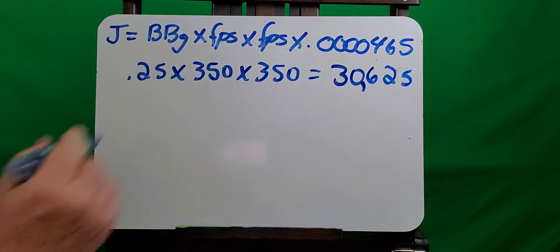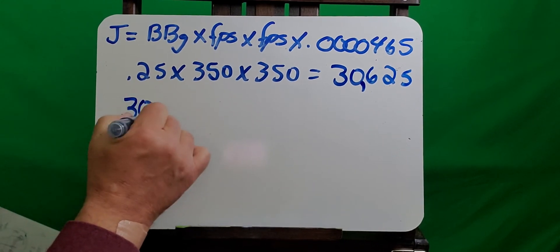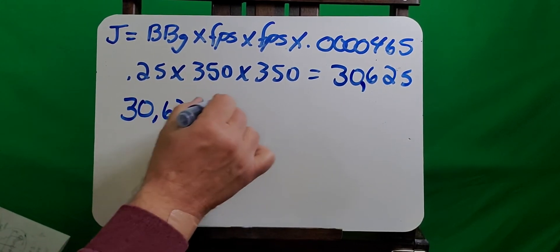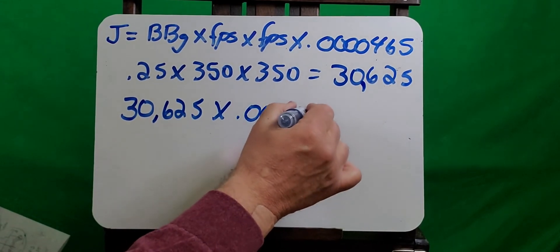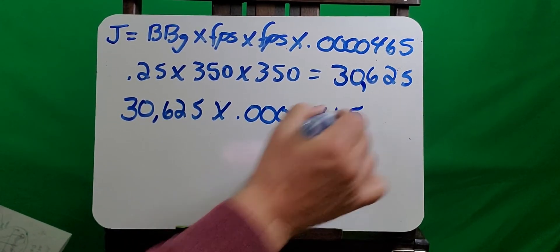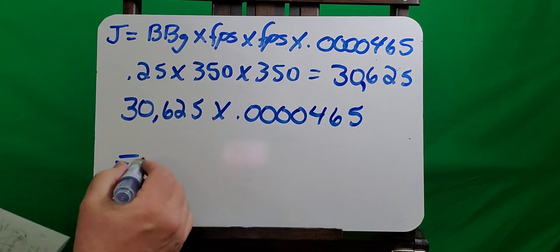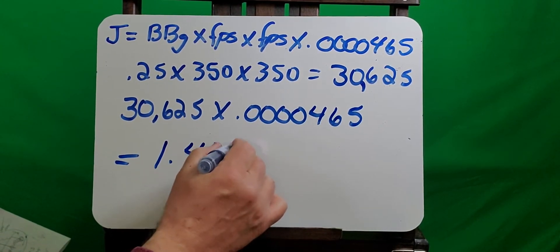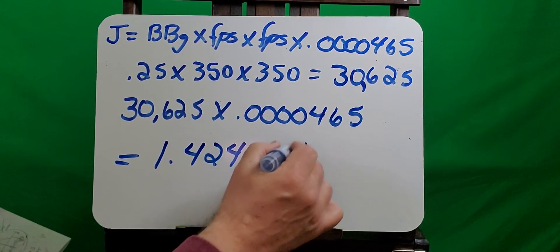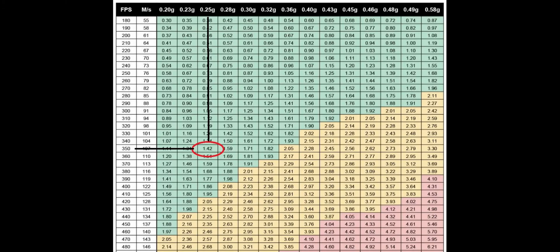So now we want to take that value, 30,625, and multiply it times our joules number, which is 0.0000465. And the answer that we get is going to be 1.42406 joules. And if you look at the joules chart, 350 feet per second with a 0.25 gram BB is equal to 1.42 joules.